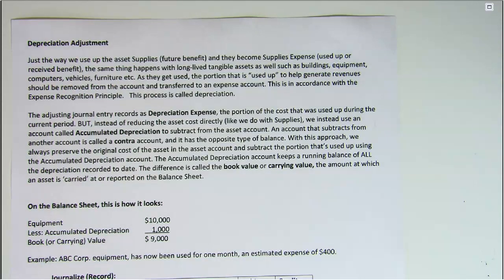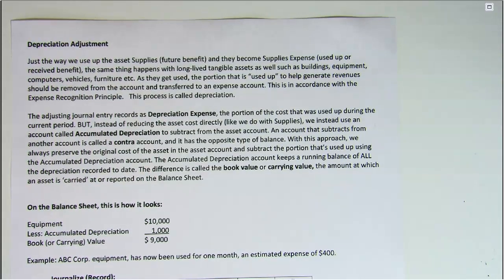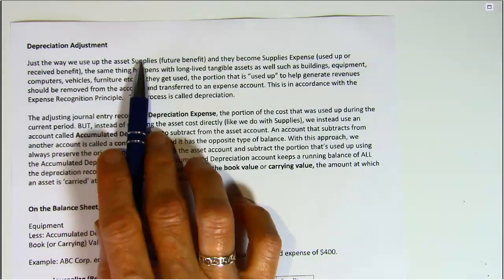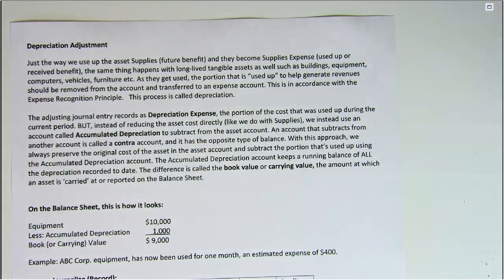Just the way we use up the asset supplies and they become supplies expense when used up, the same thing happens with long-lived tangible assets such as buildings, equipment, computers, and vehicles. They get used up, and the portion that gets used up to help you generate revenues should be removed from the account and transferred into an expense account.